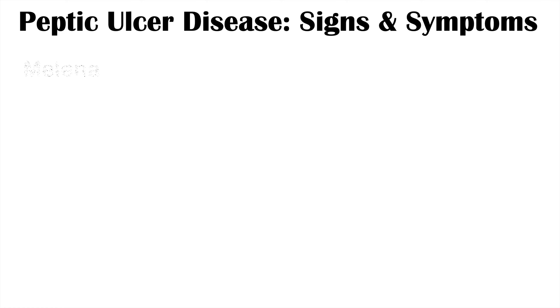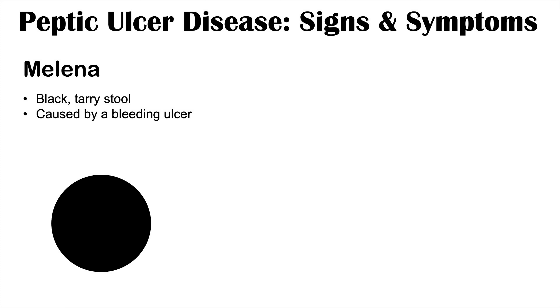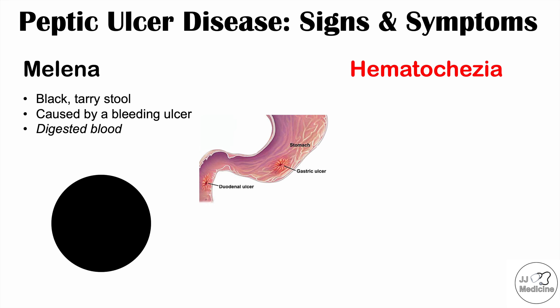When there are complications of peptic ulcer disease, we can see the following symptoms. One of them is melena — black, tarry stool with a distinctive smell. This melena stool is caused by a bleeding ulcer. If there's an ulcer in the stomach or duodenum, it can start to bleed, and the blood that is lost becomes digested as it passes through the gastrointestinal system, leading to a black tarry stool — that black coloration is digested blood.